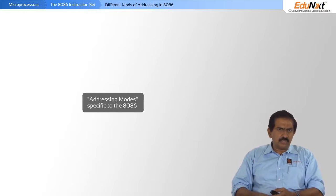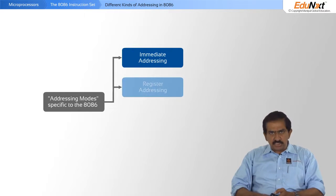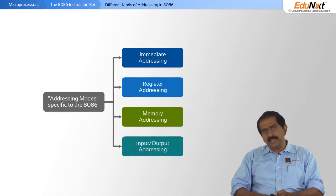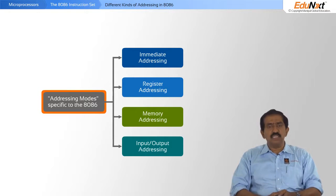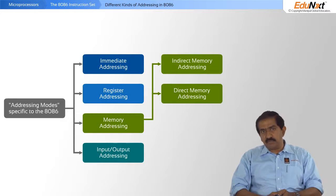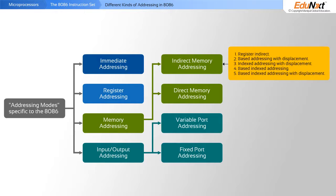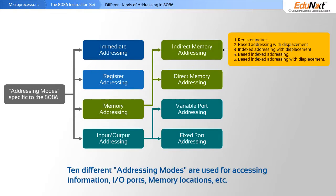Let us look at the different kinds of addressing possible in 8086. There are four major families of addressing modes: immediate addressing, register addressing, memory addressing, and IO addressing. Memory addressing in turn has direct and indirect memory addressing, and indirect memory addressing has five different subsets. IO addressing has a fixed port mode or a variable port mode. This gives you a total of ten different addressing modes for accessing information, IO ports, memory locations, etc. in the 8086.